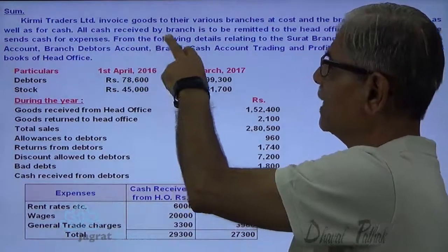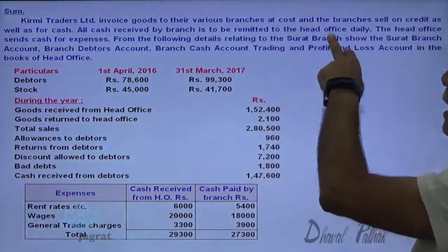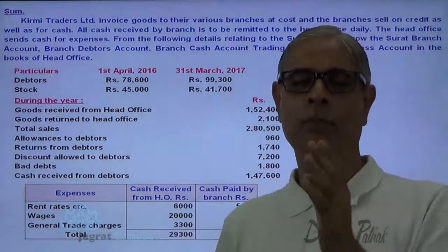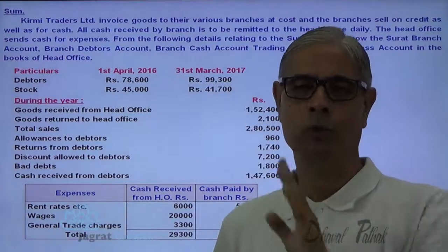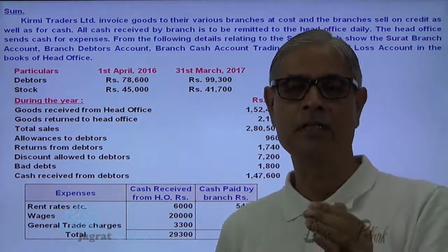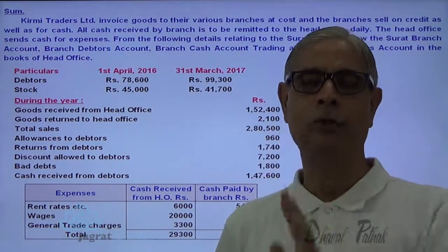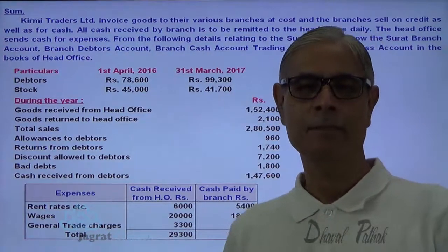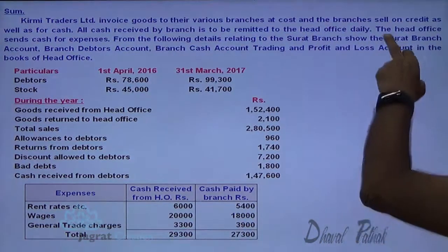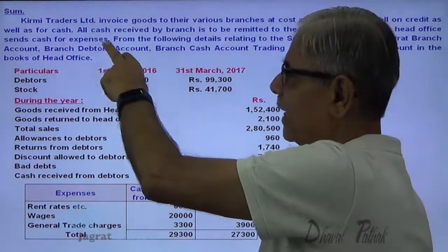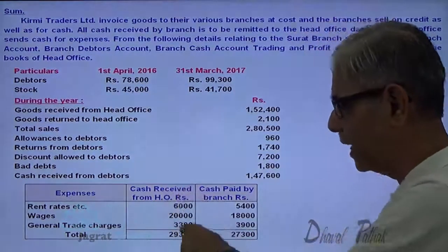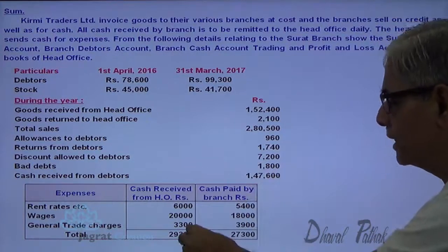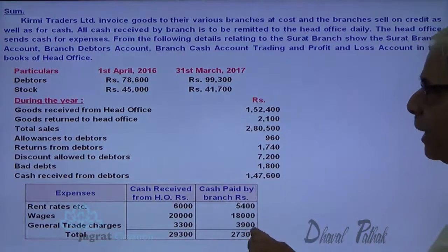All cash received by the branch is remitted to head office daily. Cash sales proceeds are required to be remitted to HO. Collection from debtors is also totally required to be remitted to HO. The head office sends cash for expenses. This is the cash sent by head office for expenses, and out of this cash sent, these are the expenses paid by the branch.